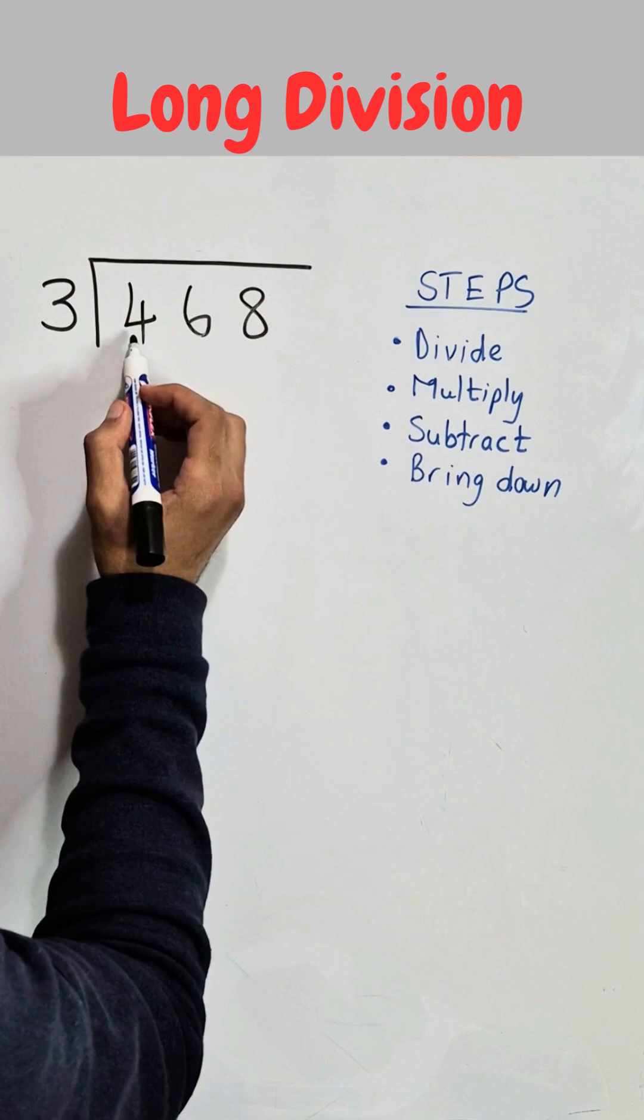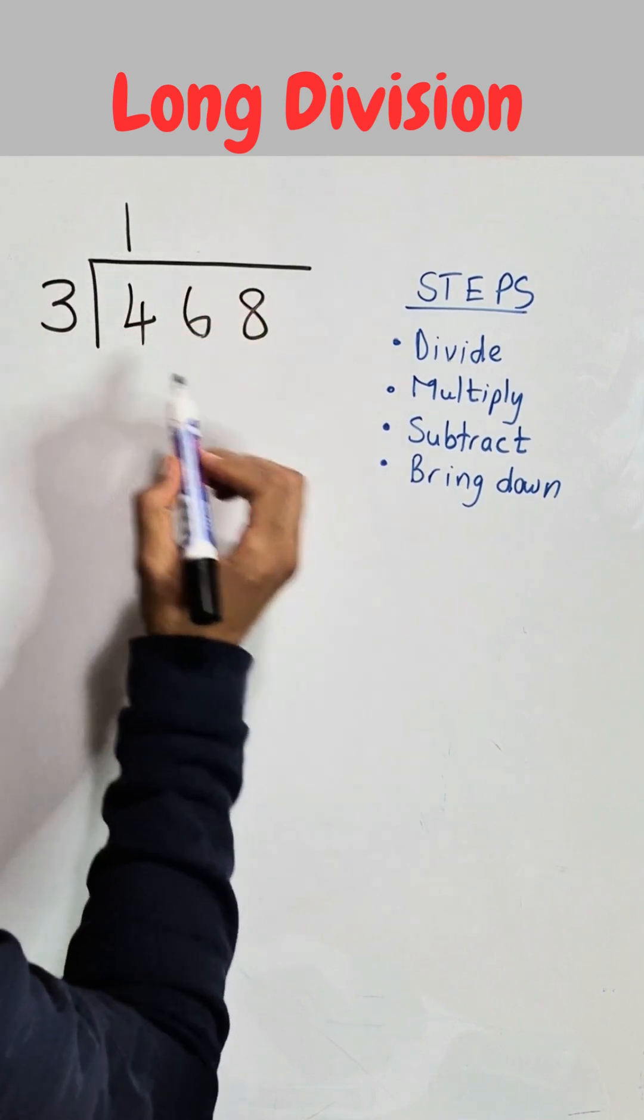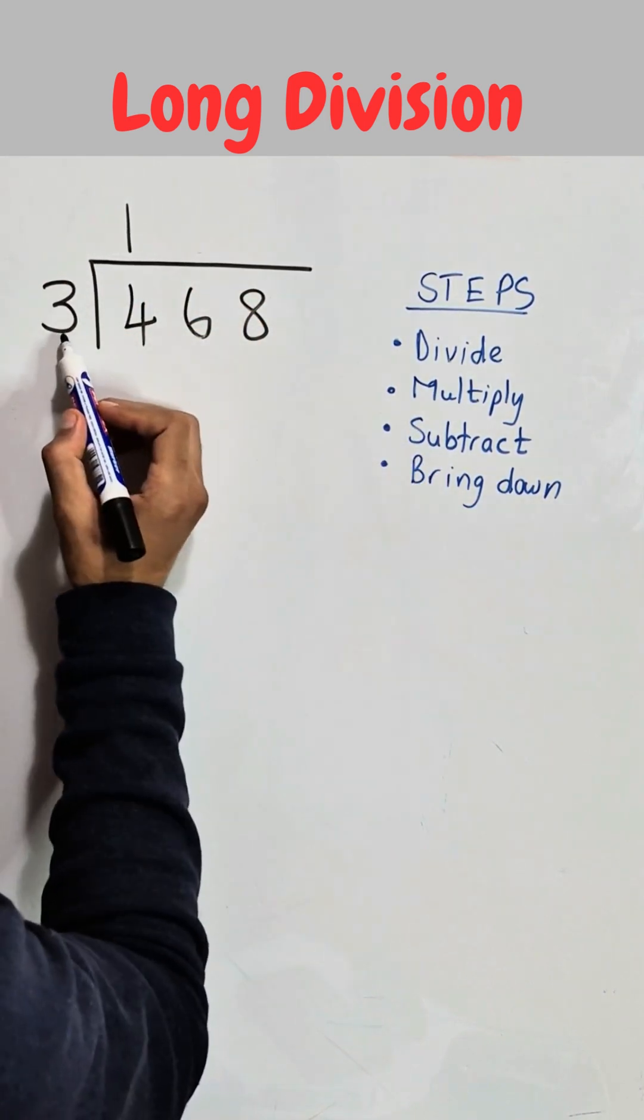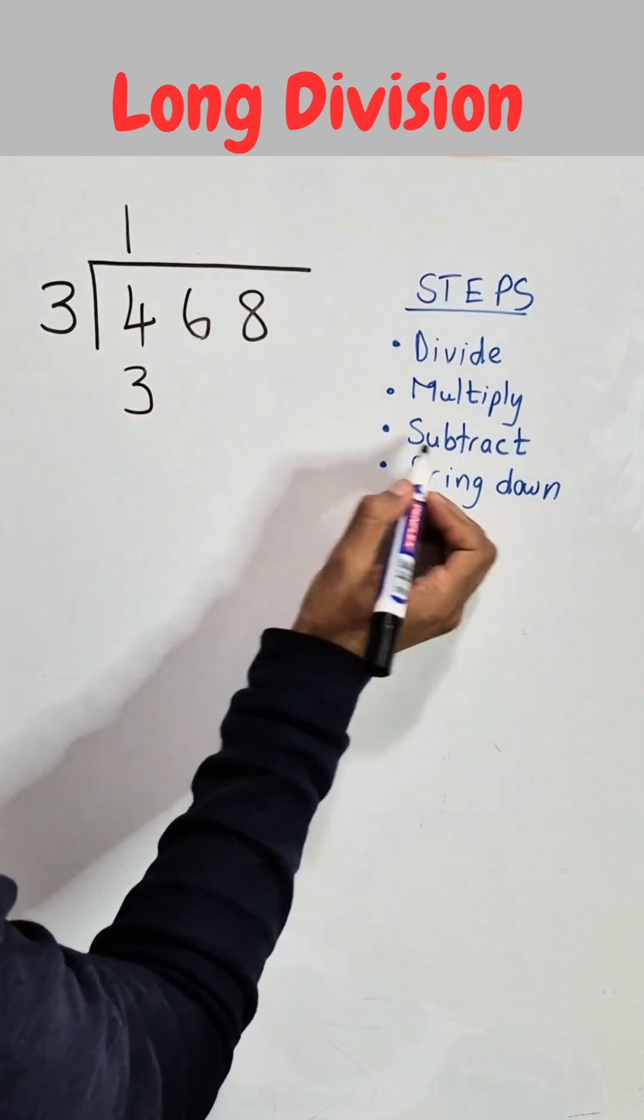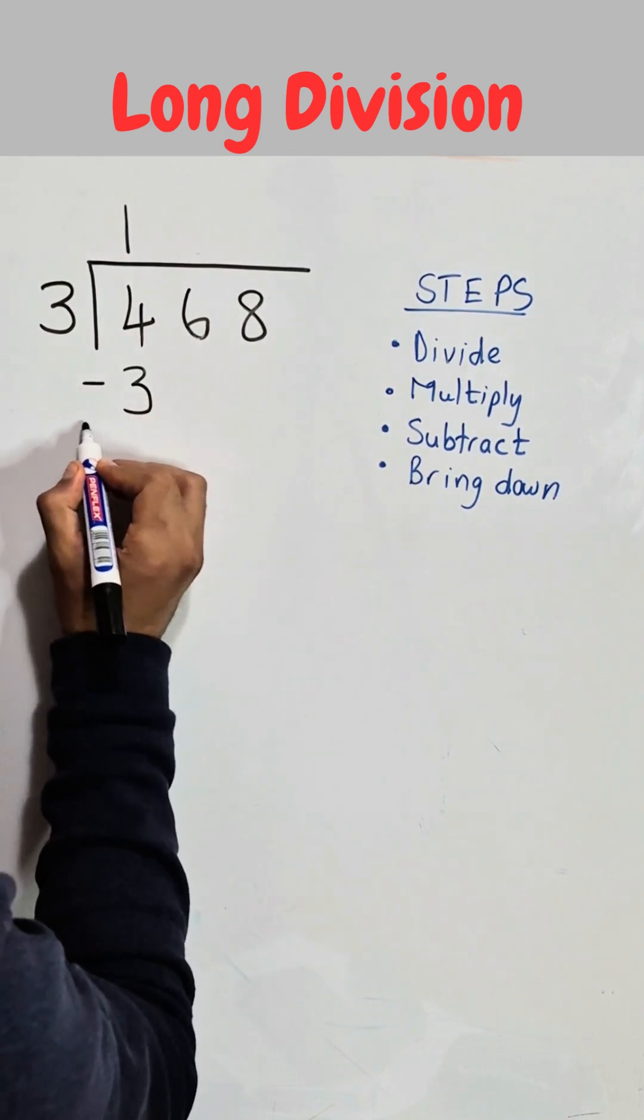3 goes into 4, 1, so that 1 will put you on top. That 1 we need to multiply by the divisor. So 1 multiplied by 3 is 3 and then we need to subtract that 3 from the 4.